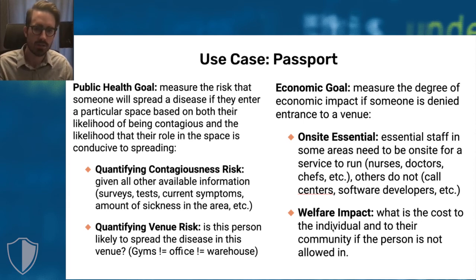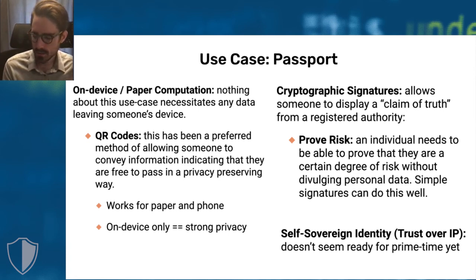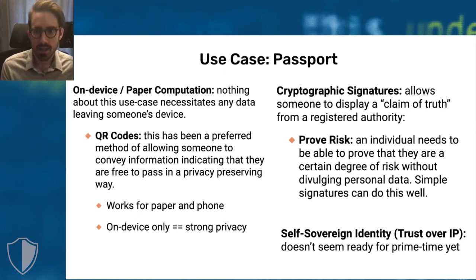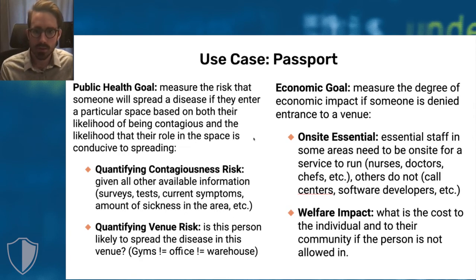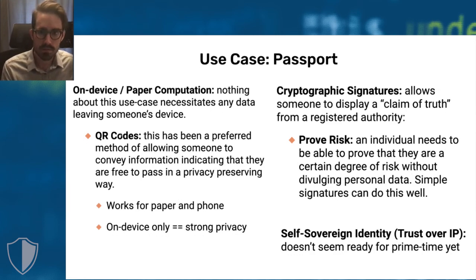At a high level, passport use cases seem to be pretty easy to get near-perfect privacy. Basically all this information is more or less locally storable on someone's device — you should be able to do all of this without centralizing any data anywhere. The two tools that matter most are QR codes — displayed either by a device or on paper — and cryptographic signatures.